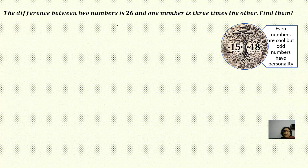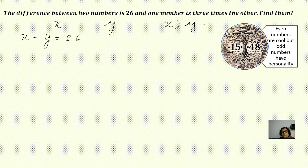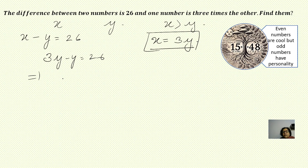The next question: the difference between two numbers is 26 and one number is three times the other. Find them. Let us take the numbers as x and y, and again assume x is greater than y. So the first equation is x minus y equals 26. One number is three times the other — since x is the greater number, x equals 3y. You must have clarity that if you had taken y as the greater number, then y would equal 3x.